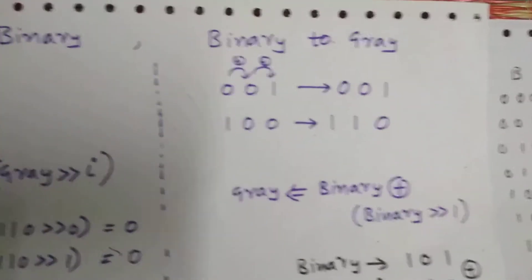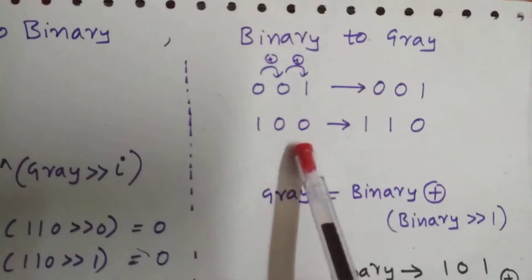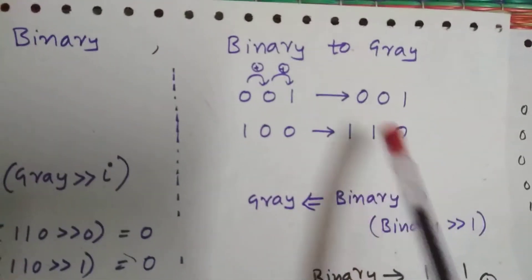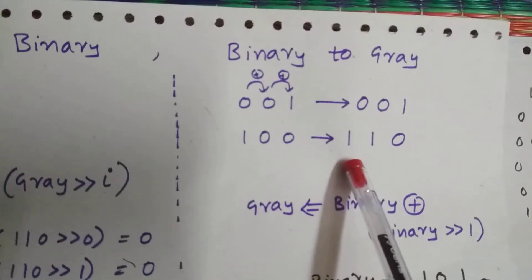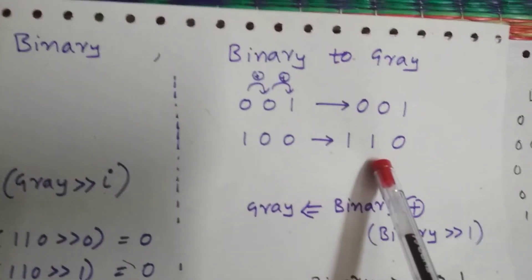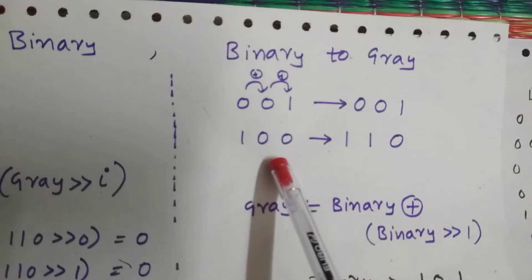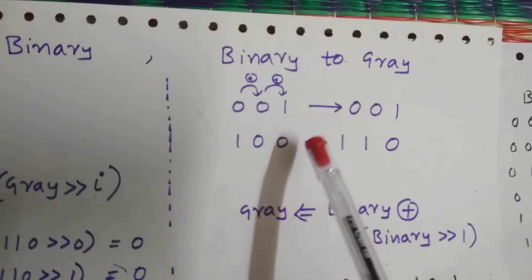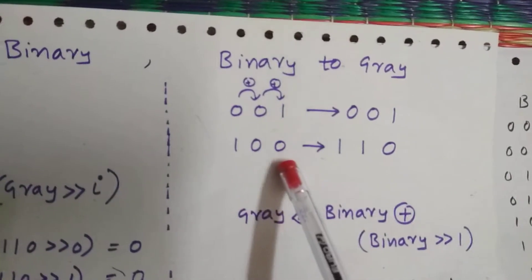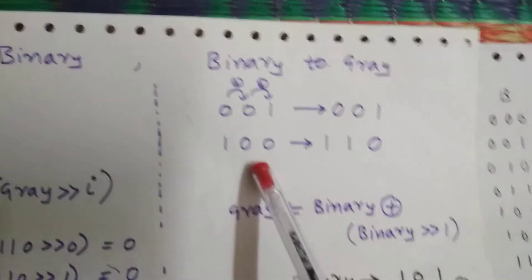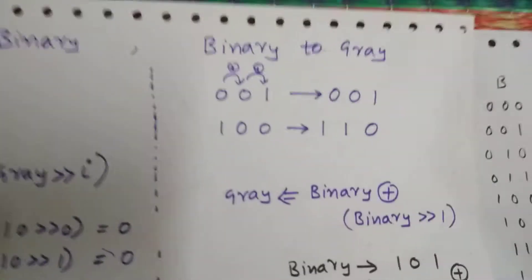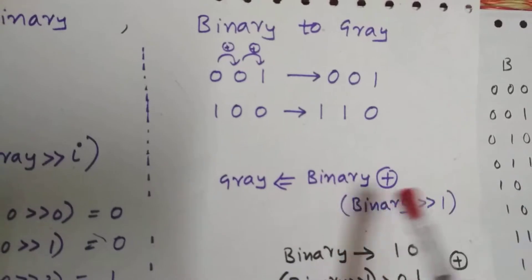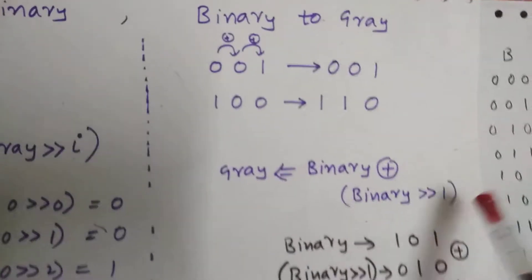Coming to binary to Gray converter, how is it happening? You can take this example: 100 for 4 in binary and Gray. The MSB bit has no change, it's written as is. The second bit is XOR of MSB bit and second bit of binary. The LSB bit is XOR of the second bit and first bit of binary. So you can calculate Gray by using this: if you want binary XOR binary right shift by 1.